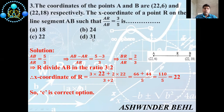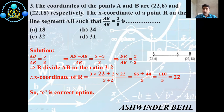Now we discuss the solution. AR/AB = 3/5 is given, so AB/AR = 5/3. Since AB = AR + RB, we get RB/AR = (5 − 3)/3 = 2/3. With the help of this diagram, you can easily understand that R divides AB in the ratio 3:2.